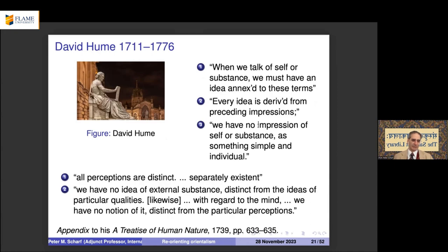David Hume, considered the ultimate empiricist, recognized that impressions come in through our senses — particularly sight and hearing — forming impressions in memory, and we somehow organize these various impressions into concepts of wholes. We form concepts of table and chair when given only distinct impressions of colors and shapes, yet he couldn't figure out how we coordinate all of these.